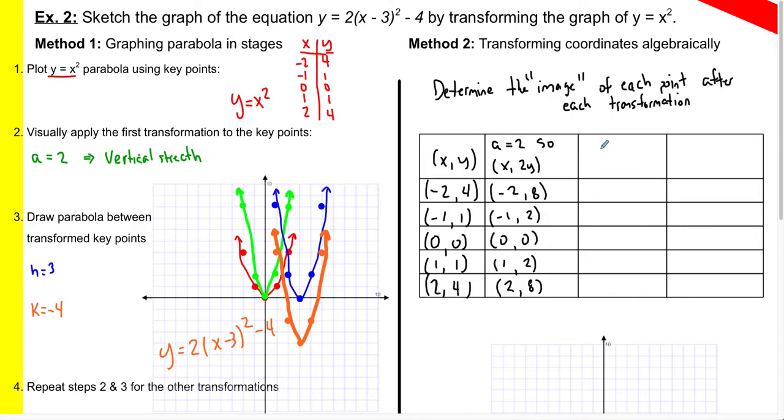Then we look at what we considered next, h equal to three. So we notice that in the equation, once again, x minus three meant that h was positive three. So what that did, we said that translated our parabola horizontally three units to the right. What that means is that it's not moving anything vertically. So our coordinates, the y-coordinates are going to remain the same. So the y-values that we had are going to remain there. They're not going to change.